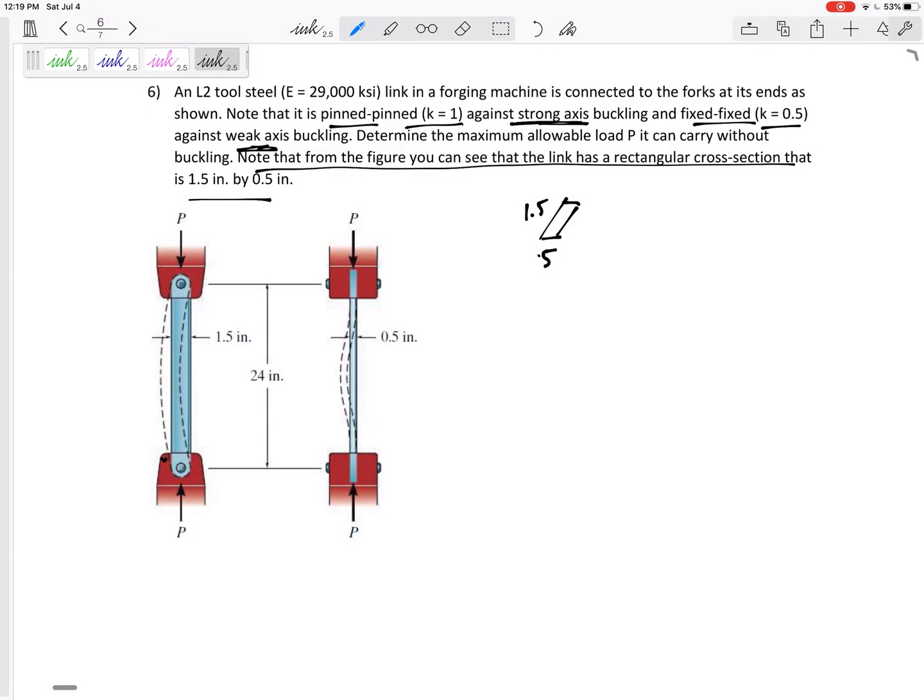Which axis is strong and which axis is weak? The stronger axis is the larger moment of inertia, the area moment of inertia. The strong axis has the larger I, the weak axis the smaller I. What are the I's? This is a rectangular cross-sectional area. If this is x and this is y...